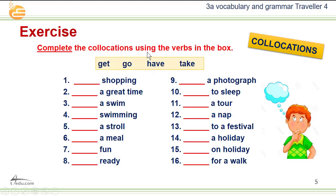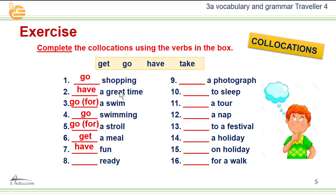Now, complete the collocations using the verbs in the box: get, go, have, and take. Shopping — go shopping. A great time — have a great time. Swim — go for a swim. Go swimming. Stroll — go for a stroll. A meal — get a meal. Fun — have fun.